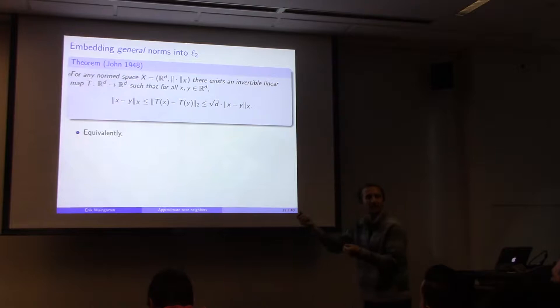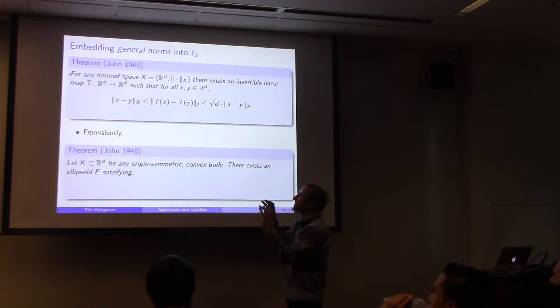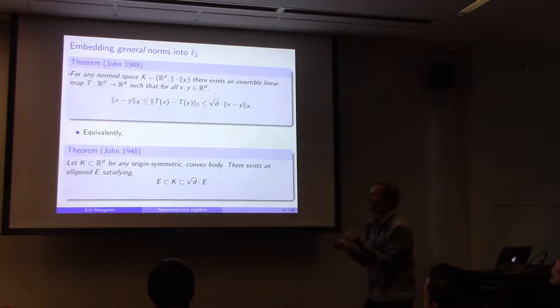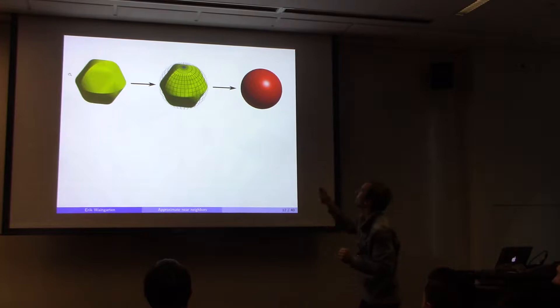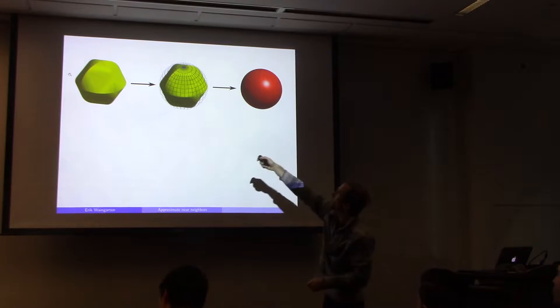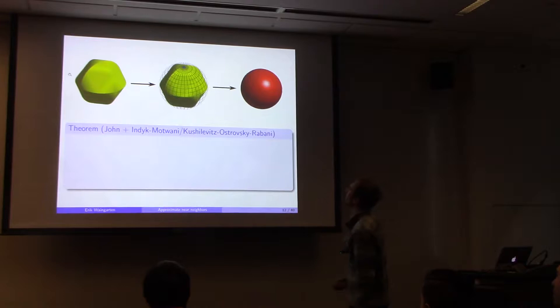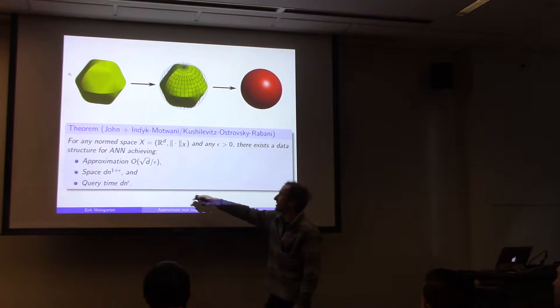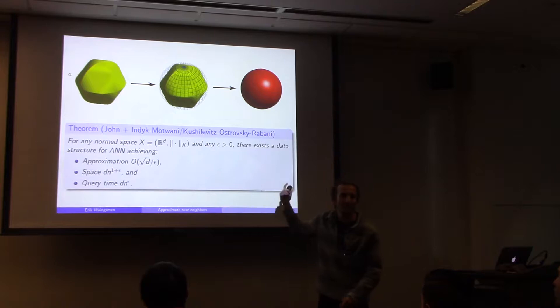So we can apply the Indyk-Motwani / Kushilevitz-Ostrovsky-Rabani data structure and conclude that for any norm space and any epsilon, there exists a data structure achieving approximation sqrt(d)/epsilon — where sqrt(d) is the loss from the embedding and 1/epsilon is the loss from the L2 data structure — using the same space and query time as the L2 structure.